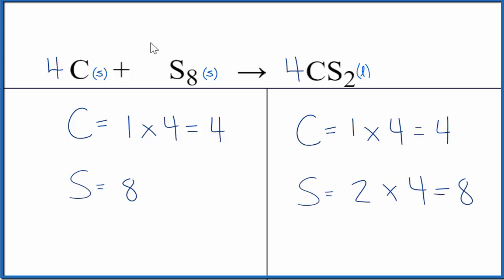If you want to know the type of reaction here, we have carbon and this octosulfur coming together. So when these two things come together to form one thing, we call this a combination or synthesis reaction. This would also be considered a redox reaction because the elements here change their oxidation states.